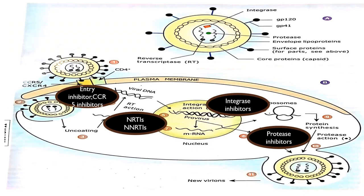Here is the mechanism where drugs are acting. At the entry stage, entry inhibitors and CCR5 inhibitors act to inhibit the entry of the virus. Second, nucleoside reverse transcriptase inhibitors and non-nucleoside reverse transcriptase inhibitors act on the reverse transcriptase enzyme and inhibit the elongation of viral DNA. Third, integrase inhibitors act on the integrase enzyme and inhibit production of mRNA and RNA. Lastly, protease inhibitors inhibit the protease enzyme and inhibit maturation of the virus.